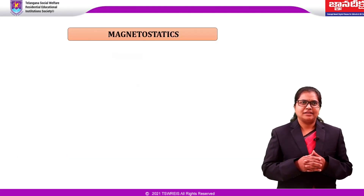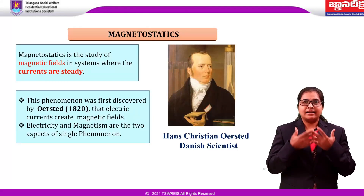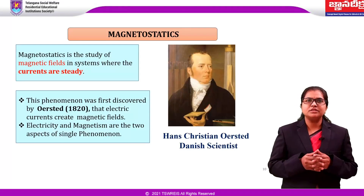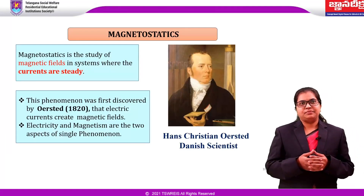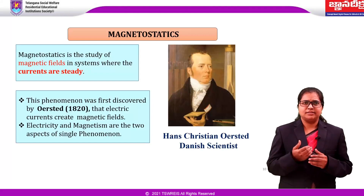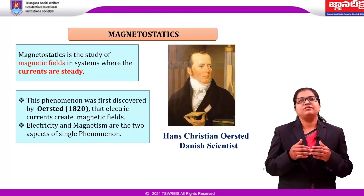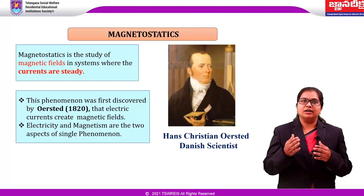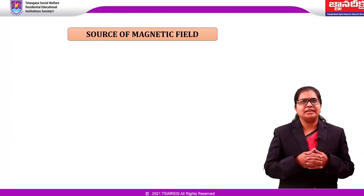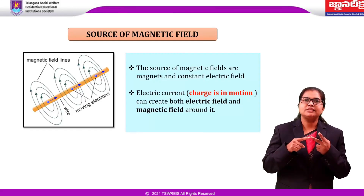What is magnetostatics? Magnetostatics is the study of magnetic fields in systems where the currents are steady, not changing with time. This phenomenon was first discovered by Oersted in 1820. Electric currents create the magnetic field. Earlier, scientists thought that electricity and magnetism were unrelated, but after this discovery they came to know that both are two aspects of a single phenomenon. The source of magnetic fields are magnets and constant electric currents.